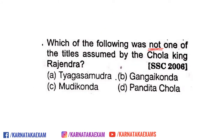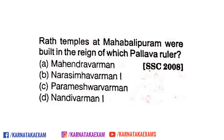Third question: which of the following was not one of the titles assumed by Chola King Raja? Options are Tyaga Samudra, Gangai Konda, Modi Konda, or Pandita Chola. The answer is Tyaga Samudra — that title was given to Vikramachola. Vikramachola had the title Tyaga Samudra and was also a great devotee of Shiva.